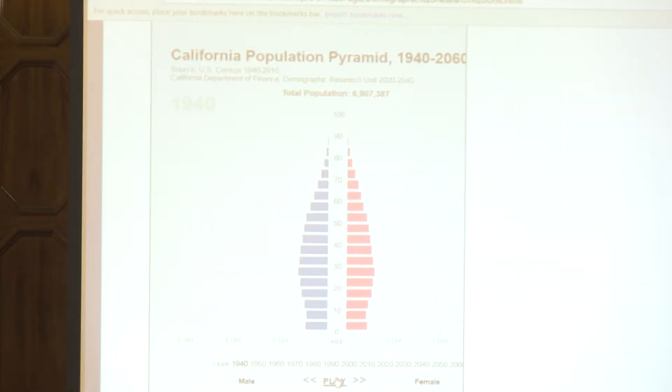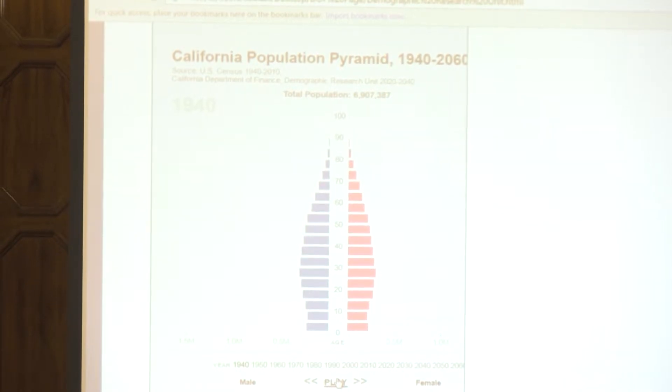So this is on our website, and I wanted to put it up because I think it shows some of the transformations that have happened in California. So population pyramids — the way to read them is younger people are at the bottom, older people are at the top. That's why they're called pyramids, because usually you have more younger people than older people. They top out at 100 because we don't have too many centenarians yet. On one side are the men, on the other side are the women, so you can see the shape of the population.